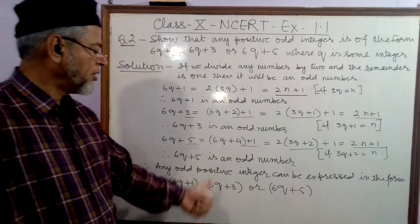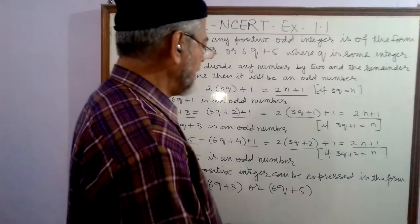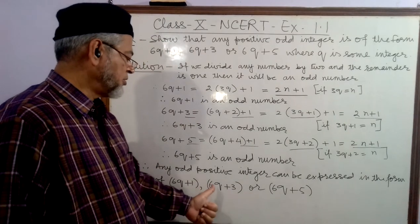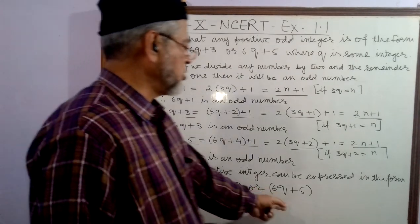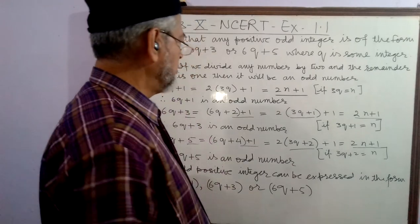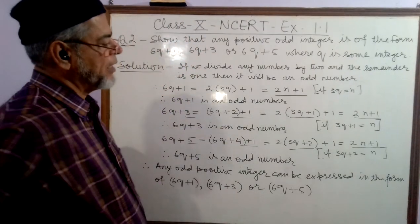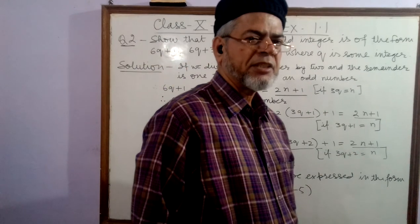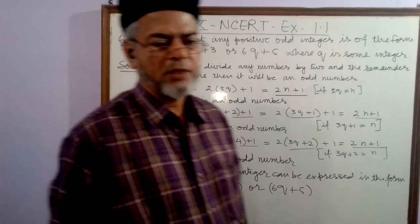So, any odd positive integer can be expressed in the form of 6q plus 1, 6q plus 3, or 6q plus 5. Because all these numbers have been converted into the form of 2N plus 1, which is the standard form of an odd number. Thank you.